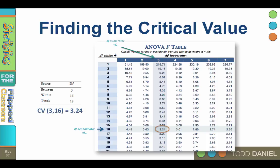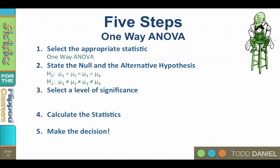And that is written CV, critical value, with 3 and 16 degrees of freedom equals 3.24. Returning now to our five steps of hypothesis testing, for an alpha level of 0.05 with 3 and 16 degrees of freedom, our critical value is 3.24.